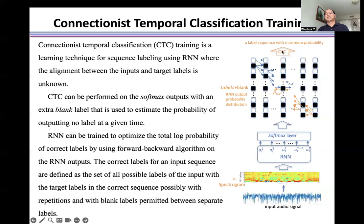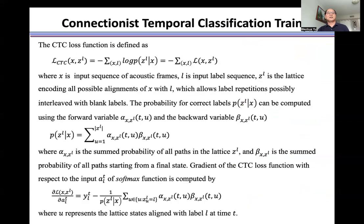CTC loss is used to find the label sequence with maximum probability. The CTC loss function is defined as L_CTC(x,z^l) = -sum log p(z^l|x), where x is input sequence of acoustic frames, l is input label sequence, and z^l is a lattice including all possible alignments of x with l, which allows label repetition possibly interleaved with blank labels.